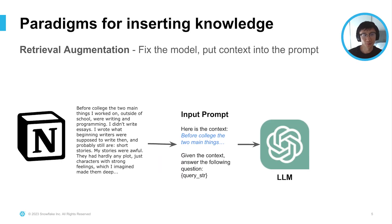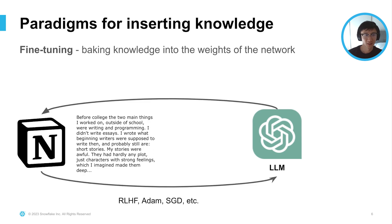Retrieval augmented generation is really just one paradigm for inserting knowledge. You fix the model and then put the context into the prompt window. Given any sort of indexed external knowledge corpus, you can first retrieve information from that corpus and put it into the prompt window of the language model. Another paradigm for inserting knowledge is baking knowledge into the weights of the network itself — through a training process like RLHF, Adam, or SGD — to actually modify the weights and internalize new information.